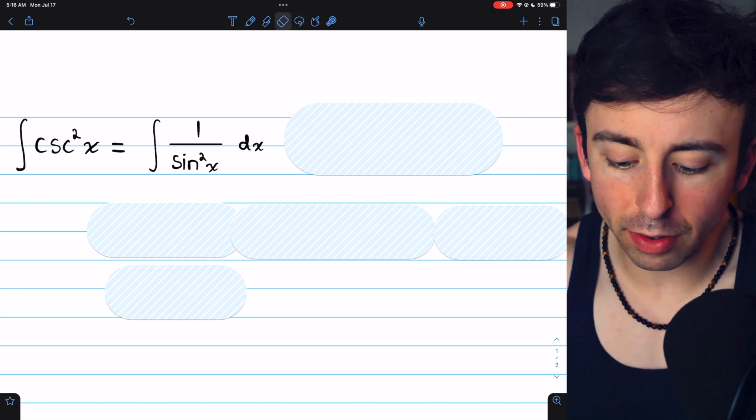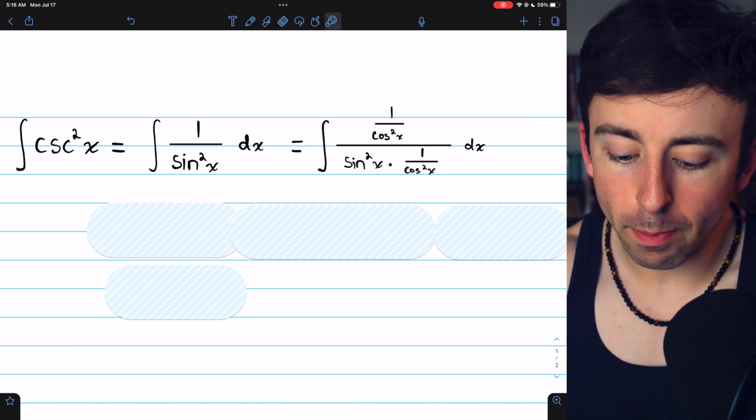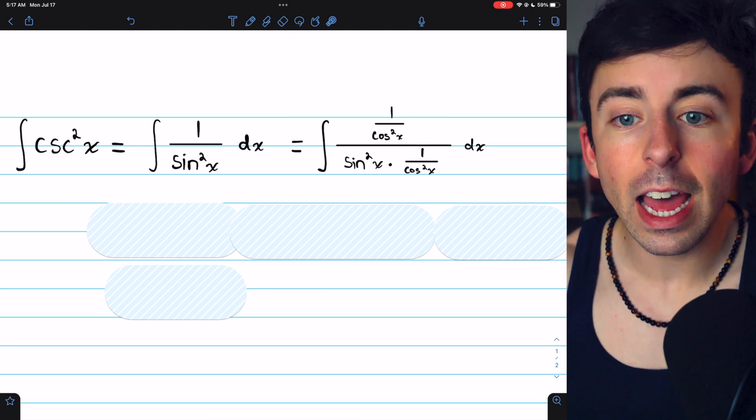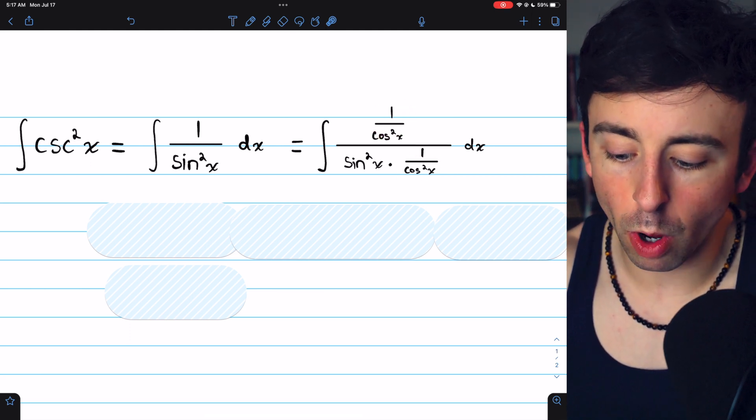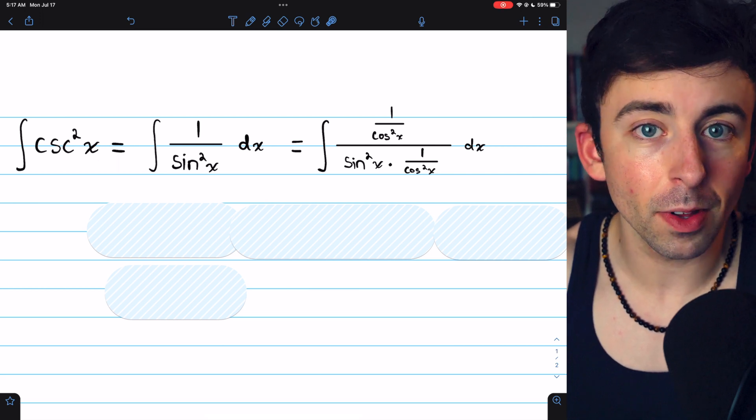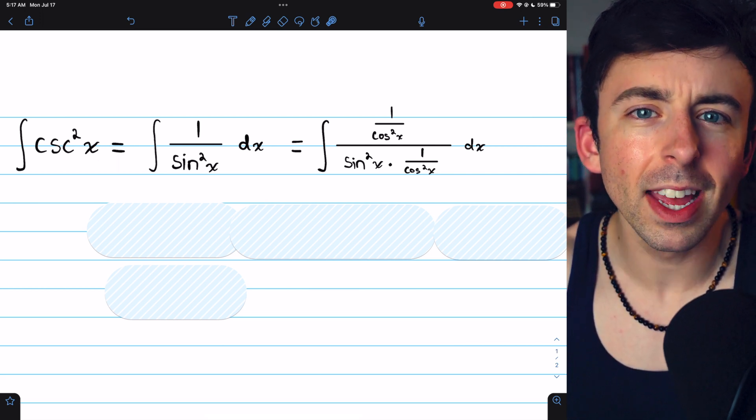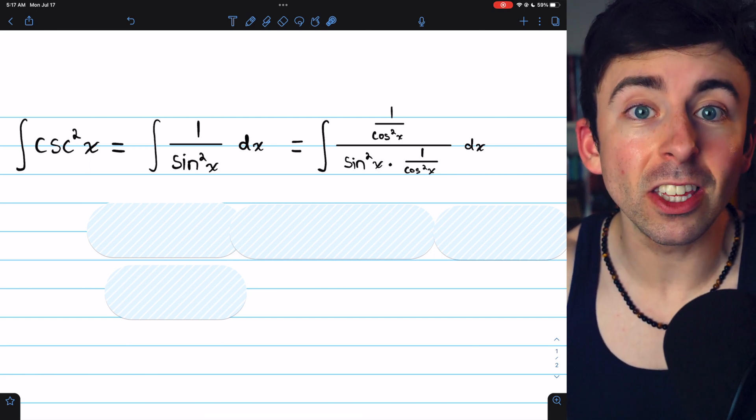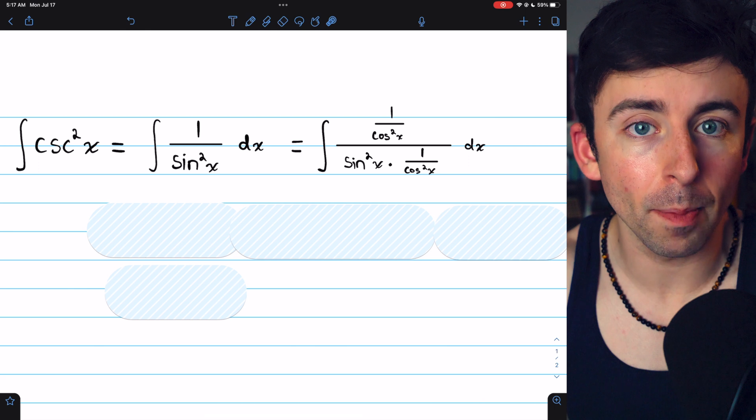Then we do a bit of a strange multiplication, multiplying the top by 1 over cosine squared and multiplying the bottom by 1 over cosine squared as well. So that's perfectly legitimate. We're just multiplying by 1. Occasionally, weird multiplication like this can open up u-substitution as an option.